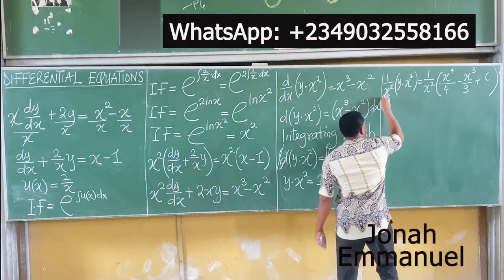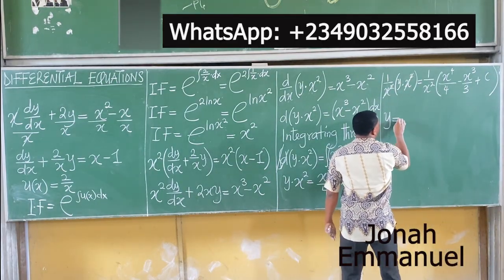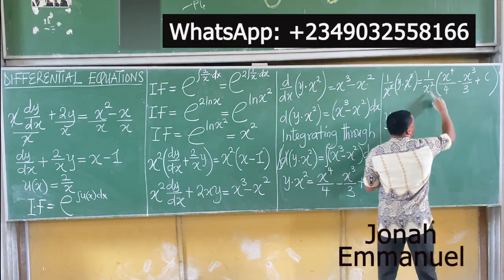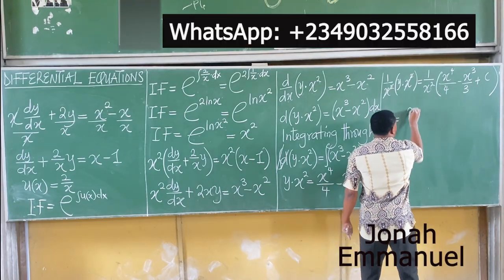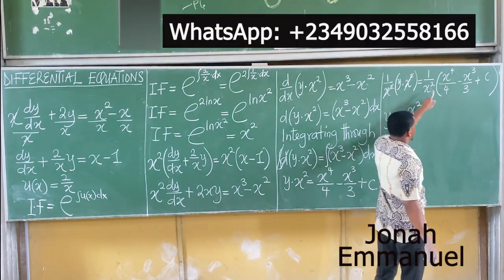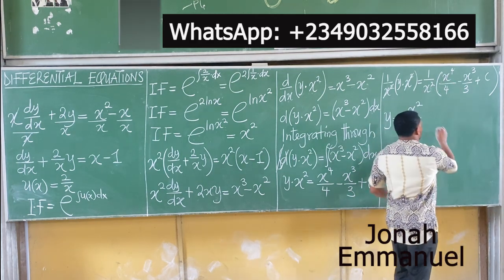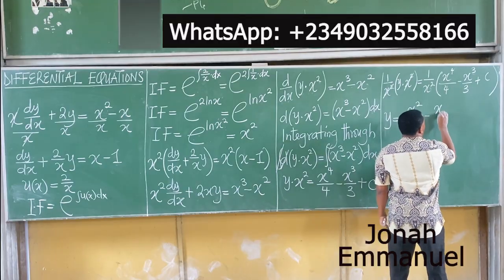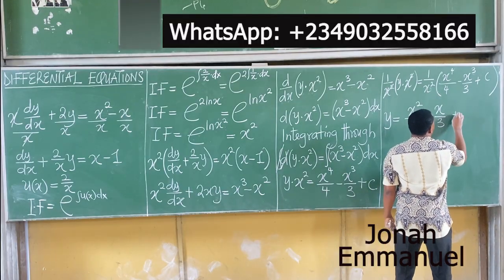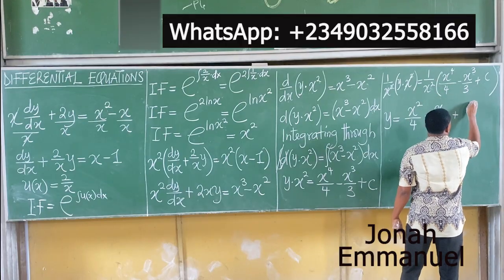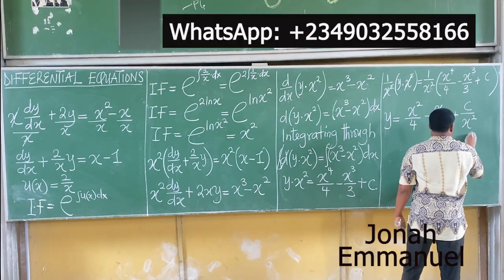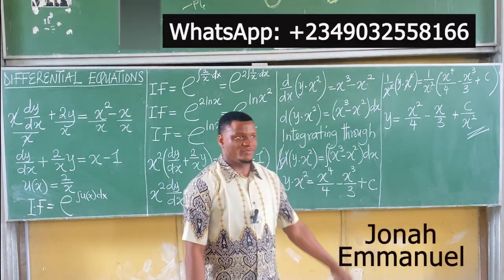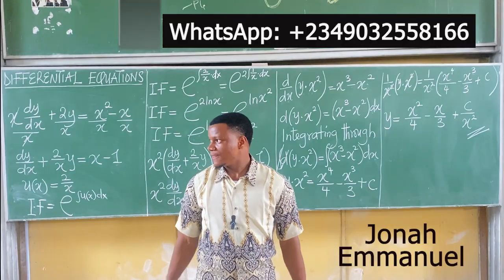Simplifying: x to power 4 over x squared — subtracting powers, 4 minus 2 gives x squared over 4. Minus x to power 3 over x squared — 3 minus 2 gives x to power 1 over 3, which is x over 3. Plus C over x squared. So y equals x squared over 4 minus x over 3 plus C over x squared. This is the answer to the question. That's basically how we solve this.